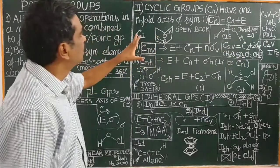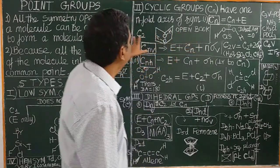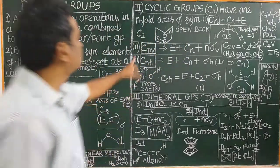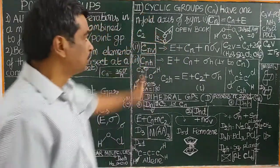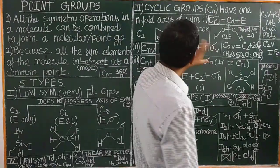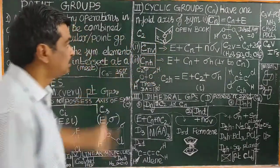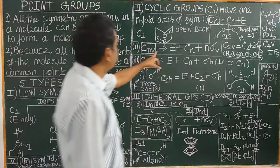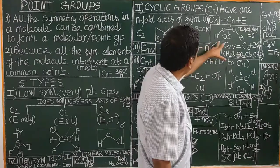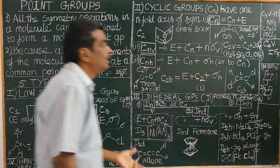For example, C2: hydrogen peroxide in an open-hook configuration possesses C2 symmetry. Now, CnV — what is CnV? It has an n-fold axis of symmetry. In addition to E and Cn, it also has sigma_v — vertical plane of symmetry. What is vertical plane of symmetry? Vertical plane of symmetry is parallel to the principal axis.